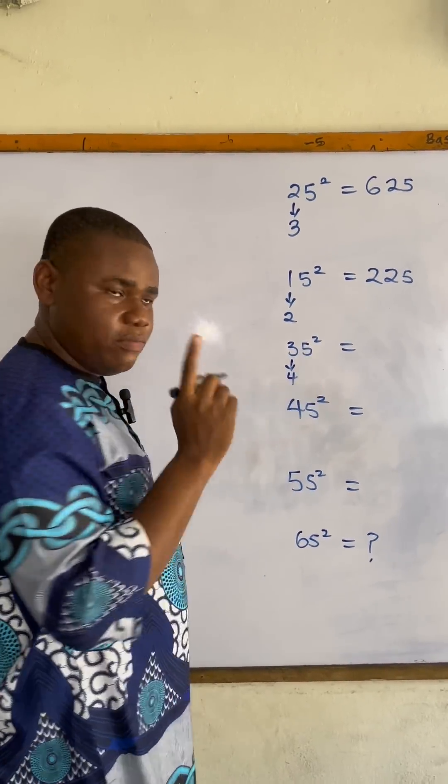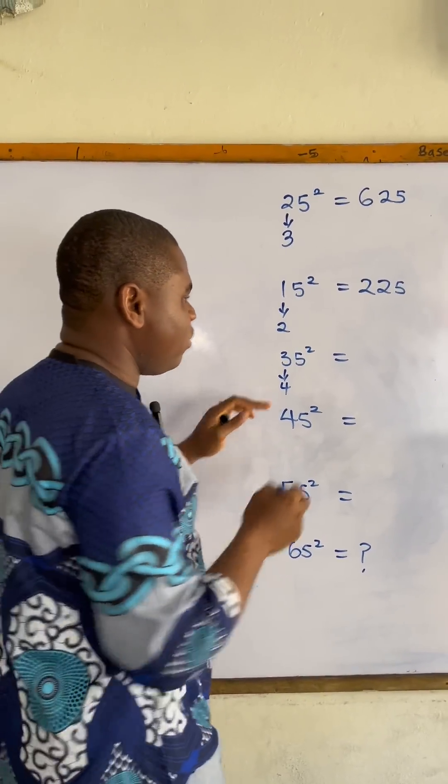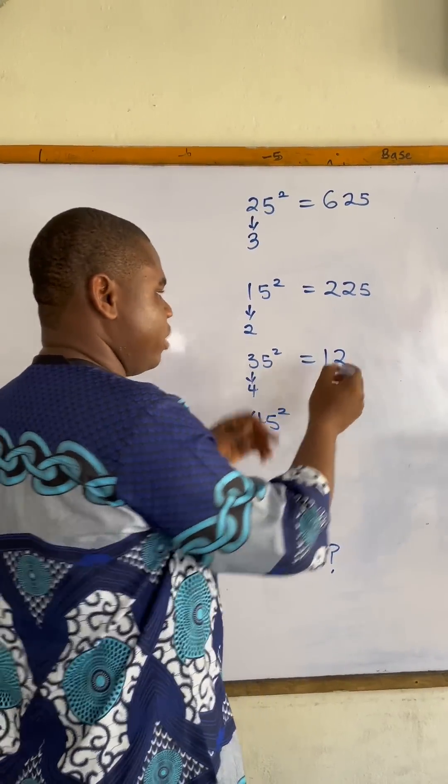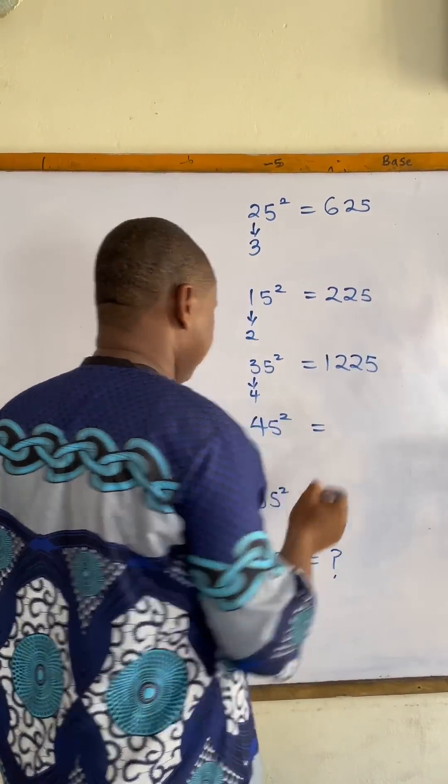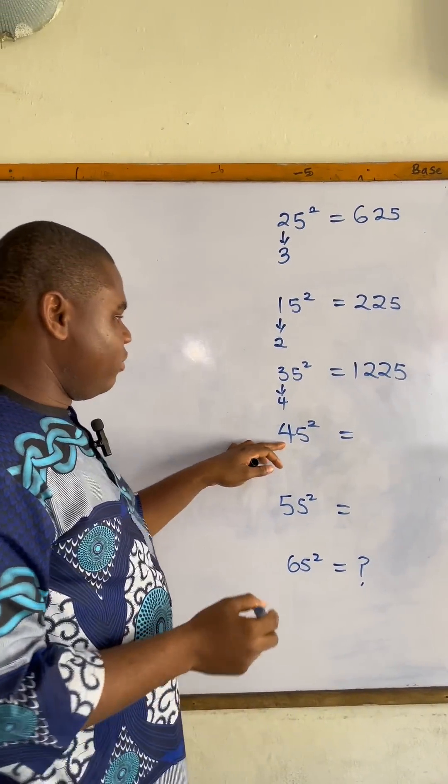The next one, the next number after three is four, so three times four is twelve, five squared is 25. So 35 squared equals 1225.